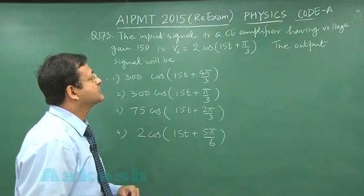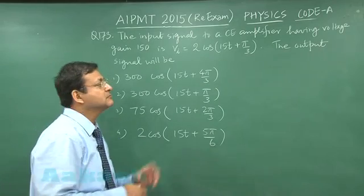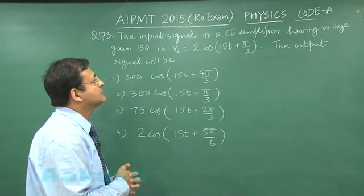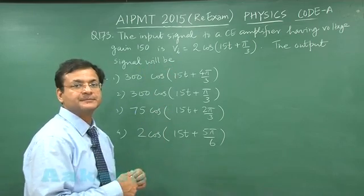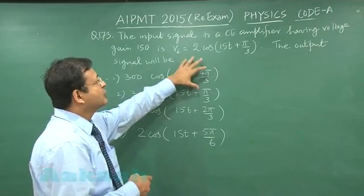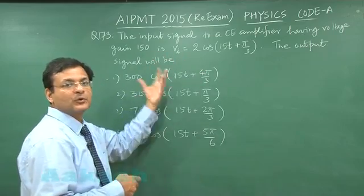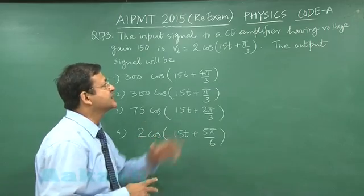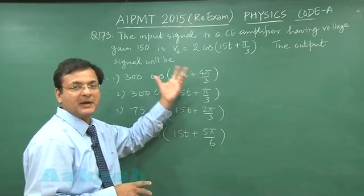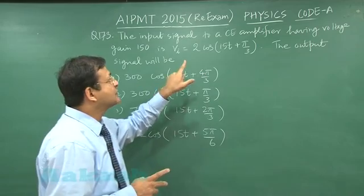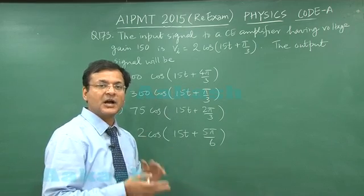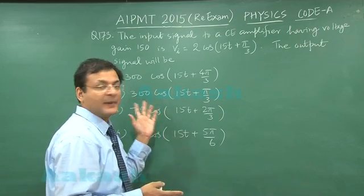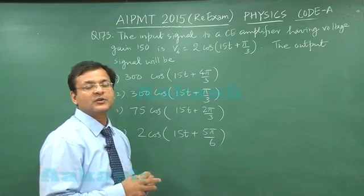Now, once again this is a very straightforward result-oriented question. If you have remembered the result, this is a common emitter amplifier. They have given you the input voltage and are asking you to find out the output voltage. First thing is that amplitude will be multiplied by the gain, and second thing which you have to remember as a result in common emitter amplifier is that output signal is out of phase by pi compared to input voltage. This is what you have to remember.